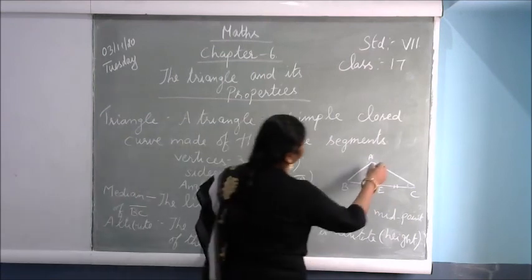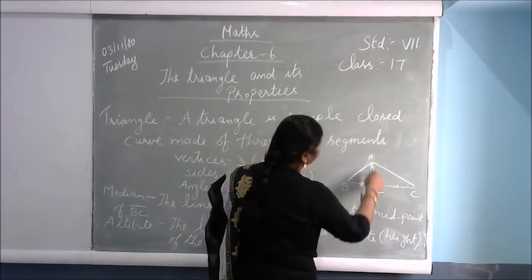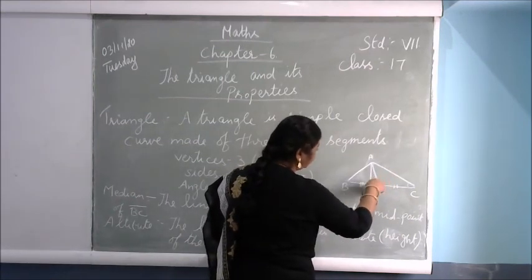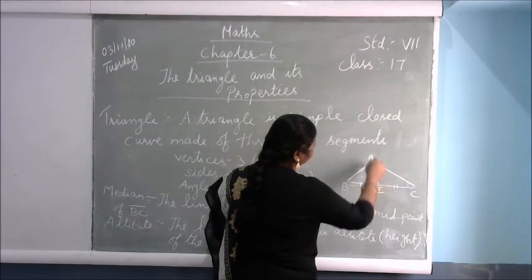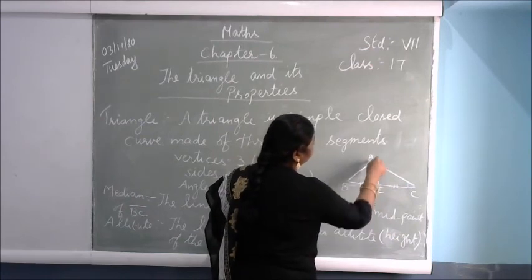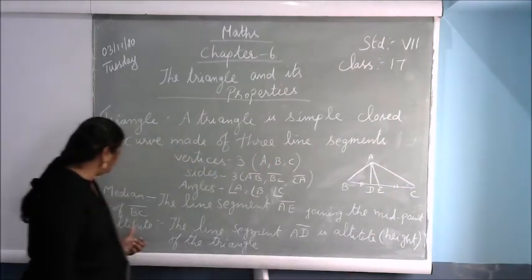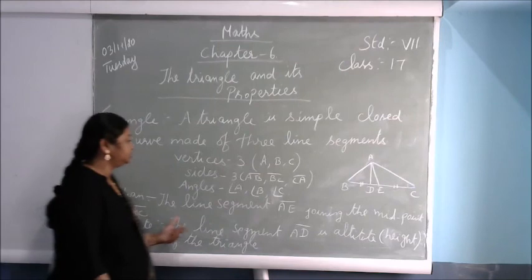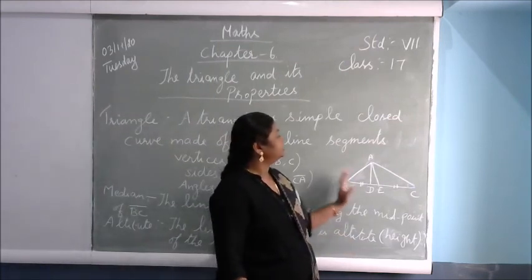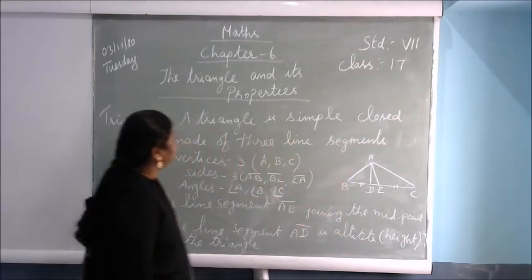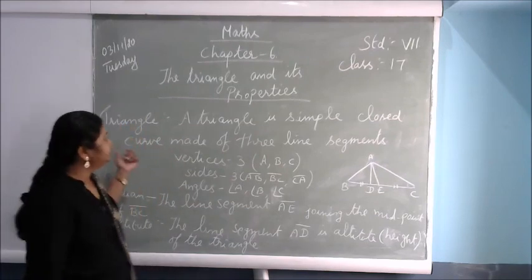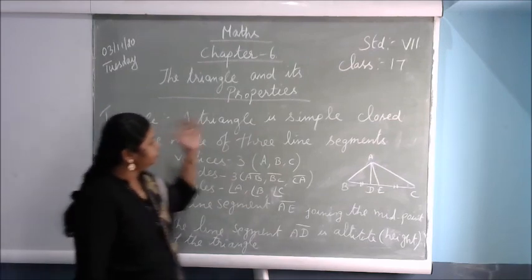Then what is AD? AD is the height — the measurement of the triangle from vertex A down to the base. Height is the line segment AD. You can also call it the altitude. This is the definition of a triangle.